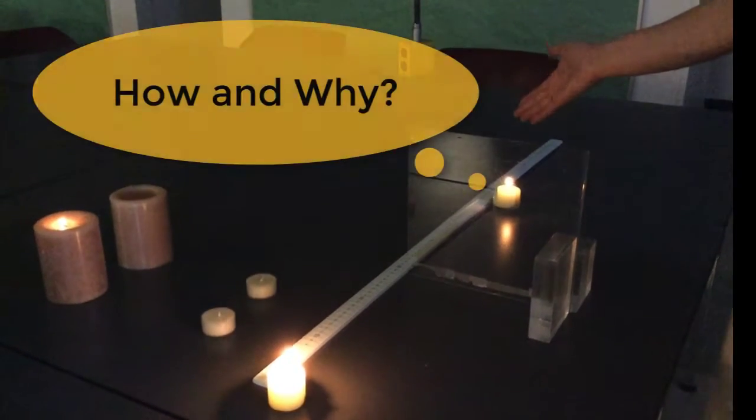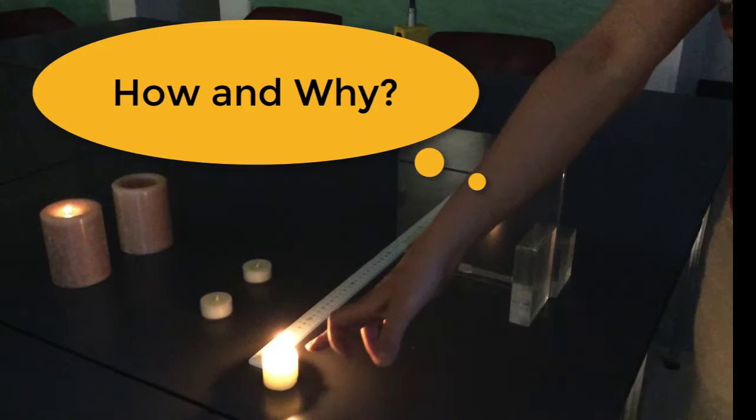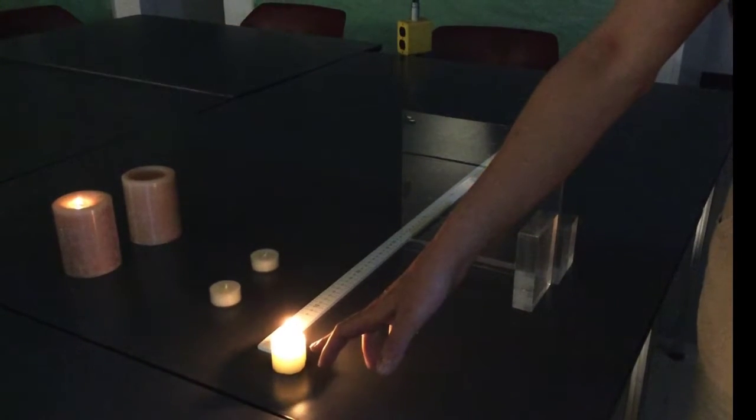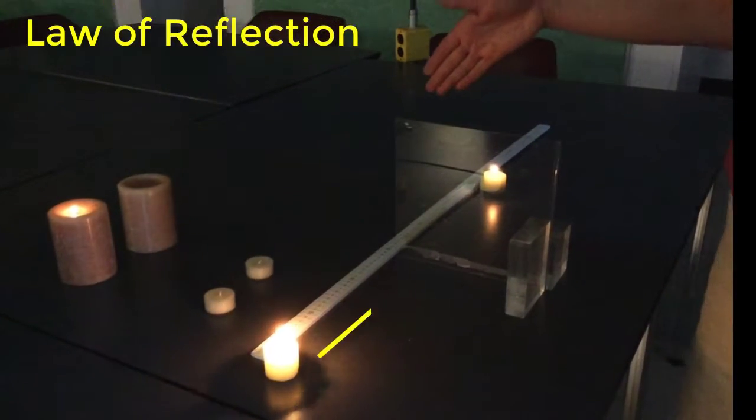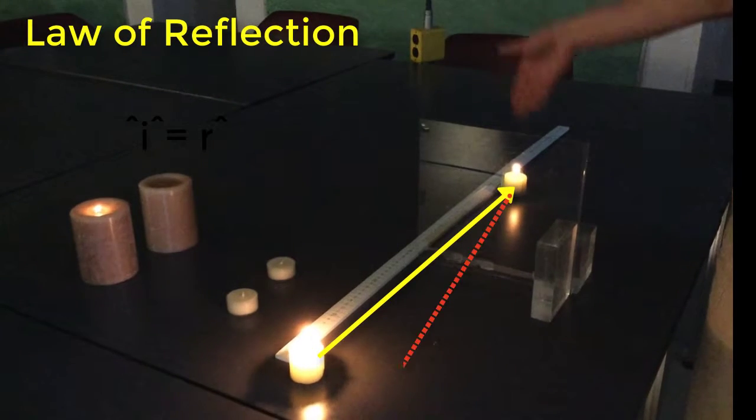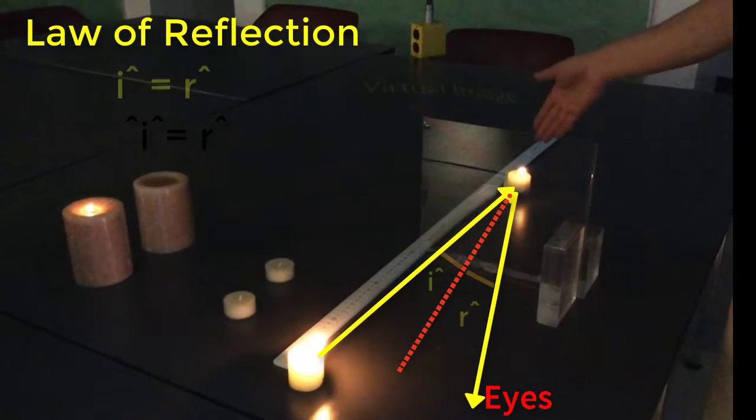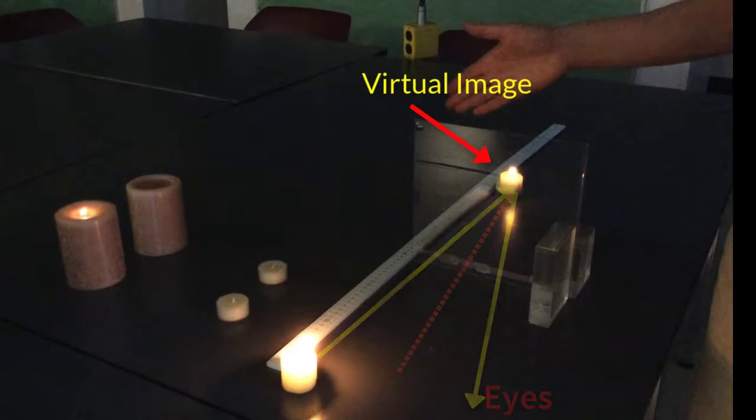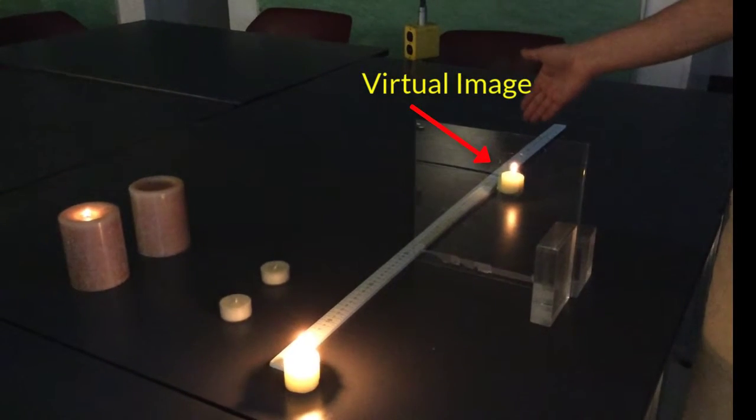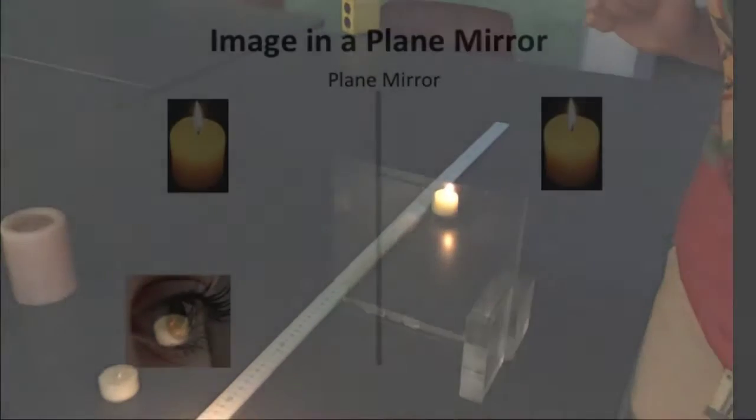You can ask, how? It appears lit because the image of this candle, which is lit, is formed. And this image is formed behind the mirror. We call it a virtual image. Plain mirrors always create virtual images because, as you know, the rays do not go through the mirror.